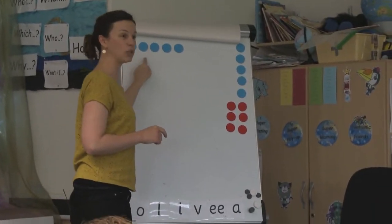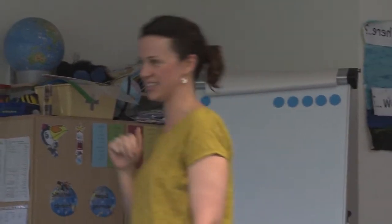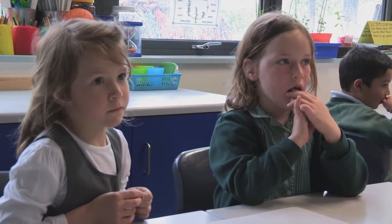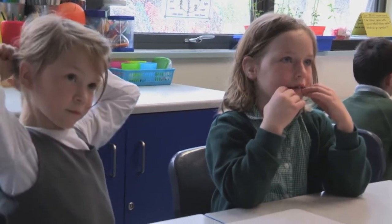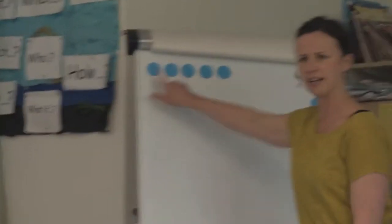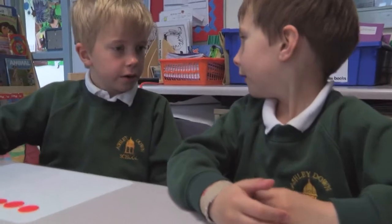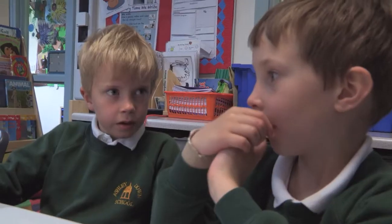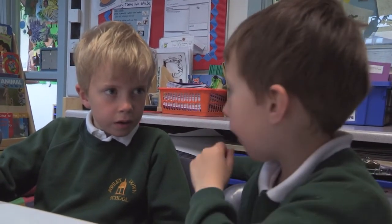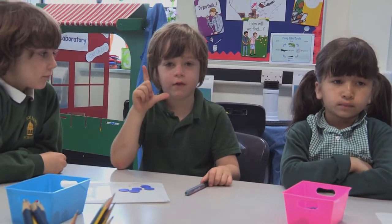Ella, what do our five counters represent? Cars. There are five cars in a car park — what do our five counters represent, Ella? Cars. Can you say it in a sentence? The five counters represent five cars. Fantastic. What does one counter represent? One counter represents one car. Freddie, what does one counter represent? One counter represents one car. Fantastic.